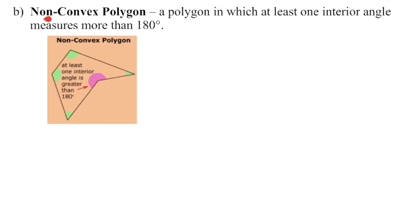A non-convex polygon, or a concave polygon, is one in which at least one inside angle measures more than 180 degrees. In the figure, the green angles are still less than 180, but this purple or pink one is greater than 180 degrees.